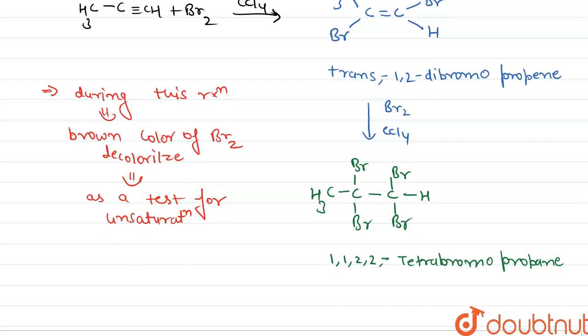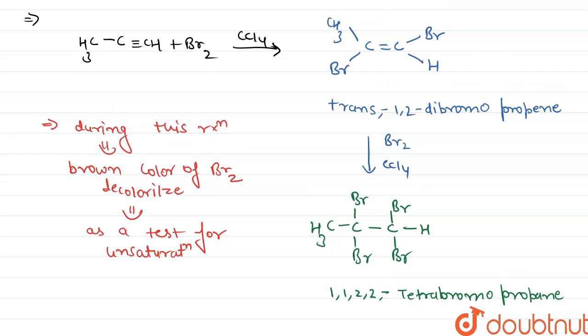That is for double bond and triple bond. So in the question, on reaction of propine with Br2, first we get trans-1,2-dibromopropene, which will further react with Br2 and CCL4 to ultimately give 1,1,2,2-tetrabromopropane. This is our answer. Thank you.